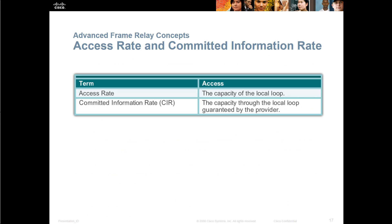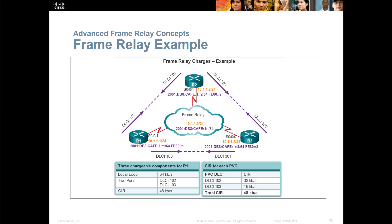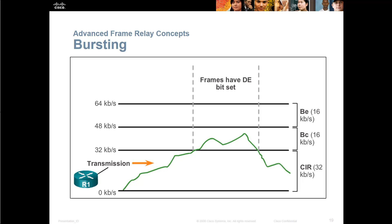For advanced concepts, we're looking at the access rate — which is the capacity of the local loop — and the committed information rate (CIR), which is the capacity through the local loop guaranteed by the provider. One is your theoretical, one is your actual. Here's a frame relay example with speeds: our cloud, the logical links through the cloud with the appropriate DLCI numbers, and the bandwidth. Then there's the bursting effect — burst is where you actually go above your allotted bandwidth and then it trickles back down, so it averages out. Home internet typically will burst over what you're supposed to get and then trickle back down.